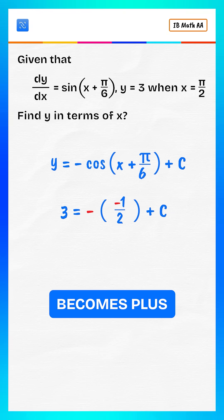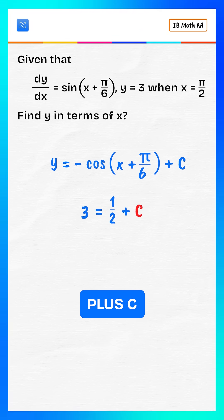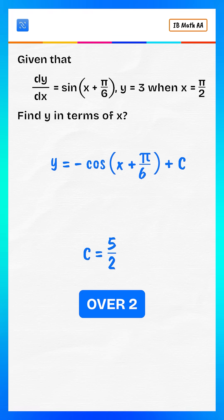So minus minus becomes plus, and we get 3 equals 1 half plus c. Subtracting 1 half from both sides gives us c equals 5 over 2.